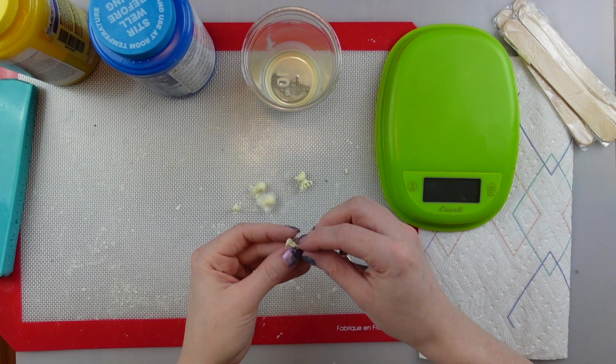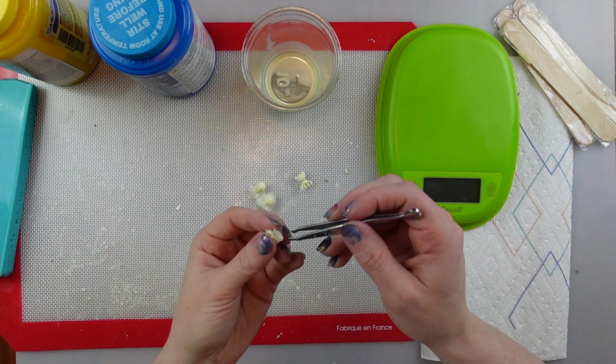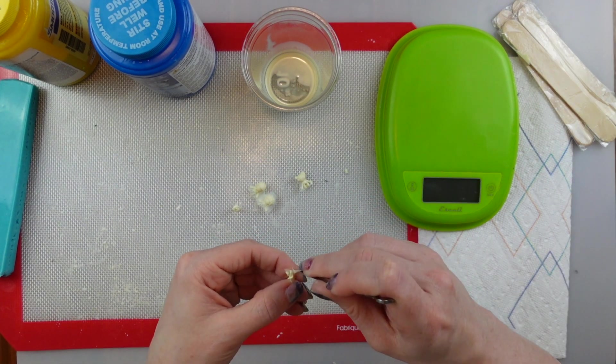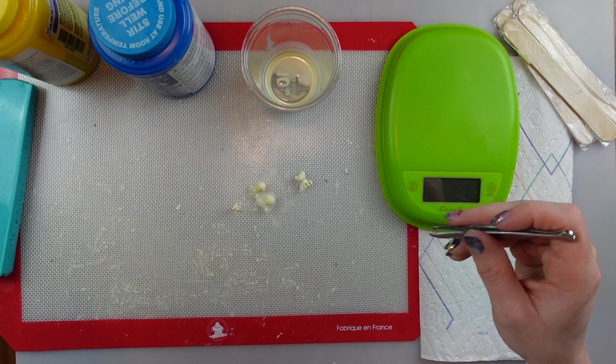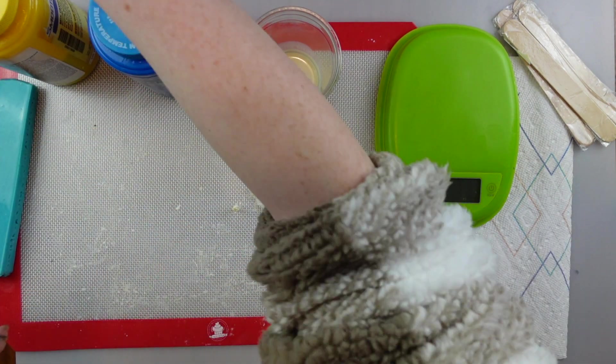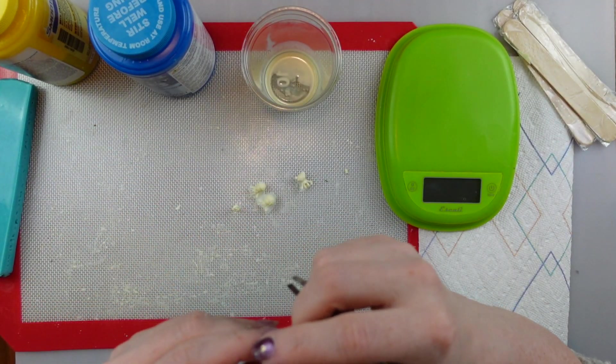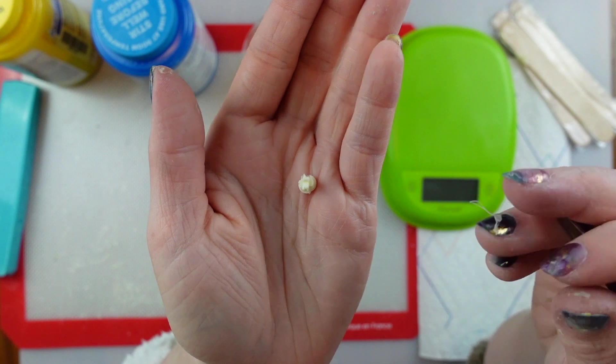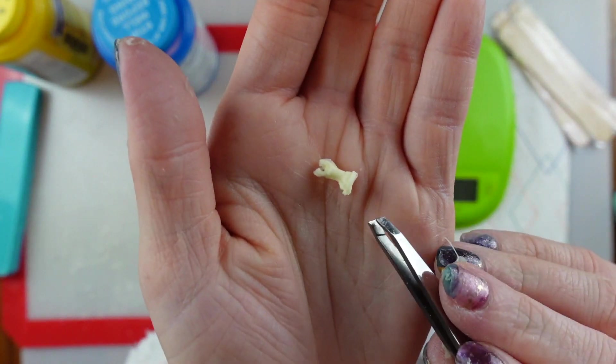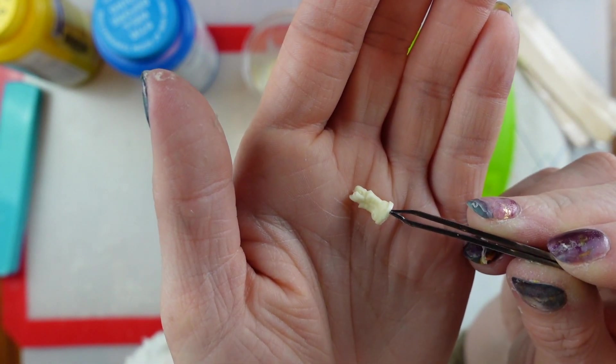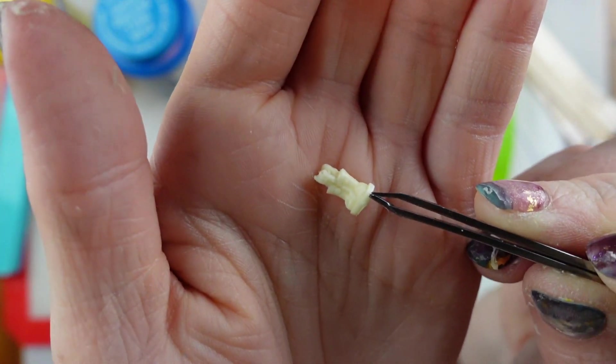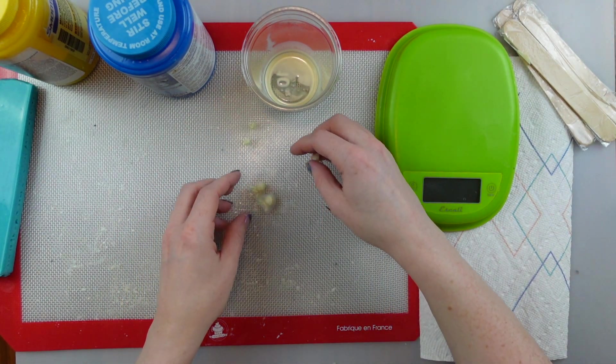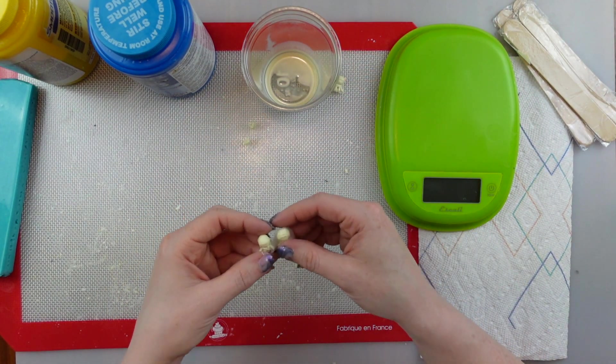So when you demold the resin, anything that kind of leaks out the sides, it's really easy to just peel it off. You can literally peel it off with your hands or sometimes I'll take tweezers and peel it off with tweezers, but really easy to work with this and manipulate it. But the front of this one, there was like a bit of the shoe was off. Like it was not aligned properly. So those weren't going to work for me.